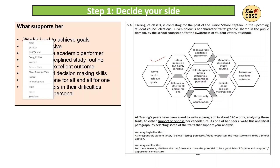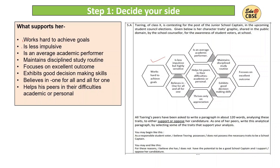The traits in her favour are: works hard to achieve goals, is less impulsive, is an average academic performer, maintains a disciplined study routine, focuses on excellent outcomes, exhibits good decision-making skills, believes in 'one for all and all for one', and helps her peers in difficulties — academic or personal. Now, 'average academic performer' — I'm taking this as a strength because it's not important that a leader should be a genius; even an average academic person can possess good leadership qualities.